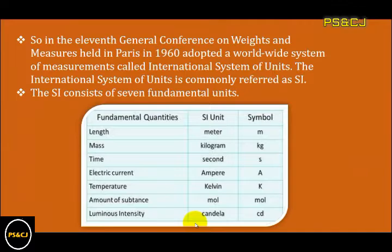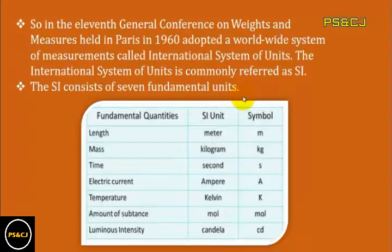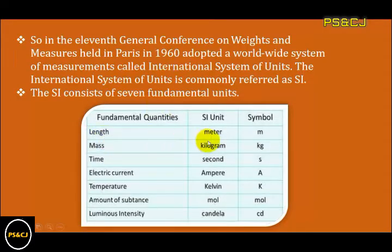So in the 11th General Conference on Weights and Measures held in Paris in 1960, a worldwide system of measurements called the International System of Units was adopted. The International System of Units is commonly referred to as SI. The SI consists of seven fundamental units. Jab ye mehsoos kiya gaya ke poori duniya mein commonly units use hone chahiye to 1960 mein Paris mein jo 11th Conference on Weights and Measures hui, usme seven base quantities ko SI units assign kiye gaye.